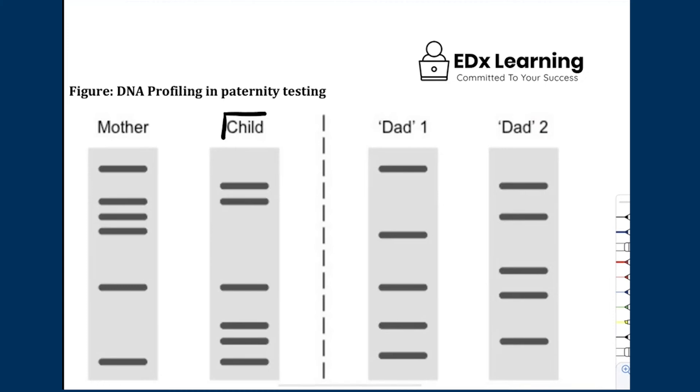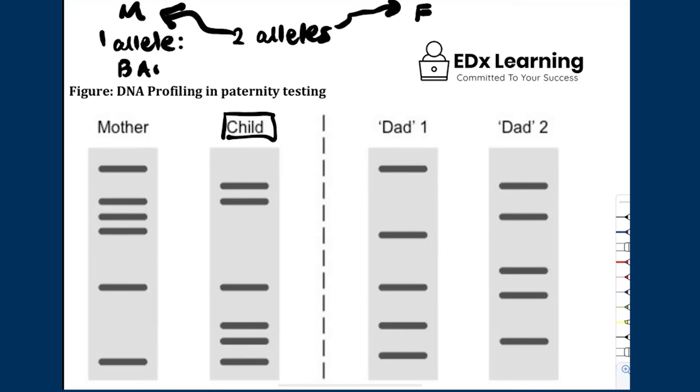A child inherits two alleles for a gene. Everyone agree? One allele must come from—one allele must come from—now, each allele is represented as a band. Because what is an allele? It's a sequence of bases that's been amplified that you can view. Make sense? So each one allele is represented as one band.